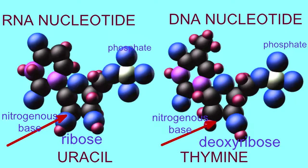RNA and DNA chains differ in the nucleotide which binds to the nucleotide adenine. In RNA, this nucleotide is uracil, with the pentose sugar ribose and the nitrogenous base uracil.